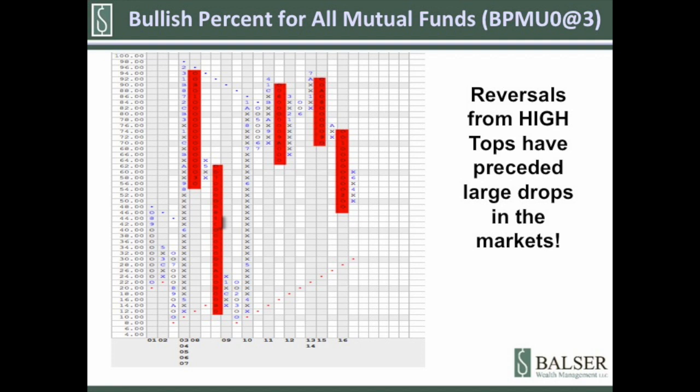When looking at a chart like this, you need to know the column it is in. A column of X's means it's moving up, and that's good. O's are going down, and that's not so good. You also need to know the signals — a buy signal or a sell signal. A buy signal is where a column of X's exceeds a previous column of X's. A sell signal is where a column of O's exceeds a previous column of O's. It's not necessarily important to know the patterns, but you must know the column and the signal.